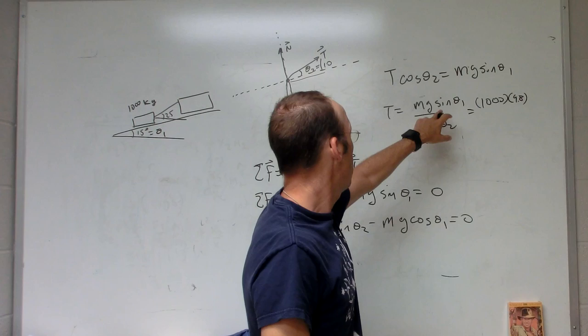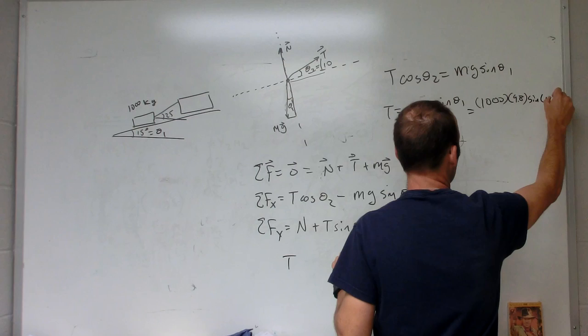So it's going to be 1000 kilograms times 9.8 newtons per kilogram, which gives me units of newtons—what I want—sine of 15 degrees over cosine of 10 degrees.